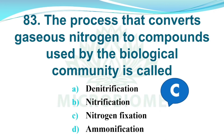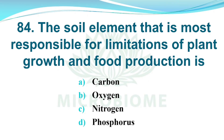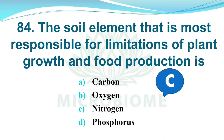And next, the soil element most responsible for limitations of plant growth and food production is. Options: A) Carbon, B) Oxygen, C) Nitrogen, D) Phosphorus. The right answer is Option C, Nitrogen.